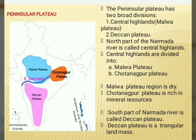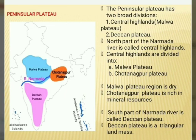The Peninsular Plateau has two broad divisions: Central Highlands and Deccan Plateau. The north part of the Narmada River is called Central Highlands, which are divided into Malwa Plateau and Chota Nagpur Plateau. Compared to the Gangetic Plain, the Malwa Plateau region is dry and rivers are not perennial. That is why irrigation for the second crop depends on tube wells and tanks. A perennial river means a river flowing throughout the year — they never dry up.